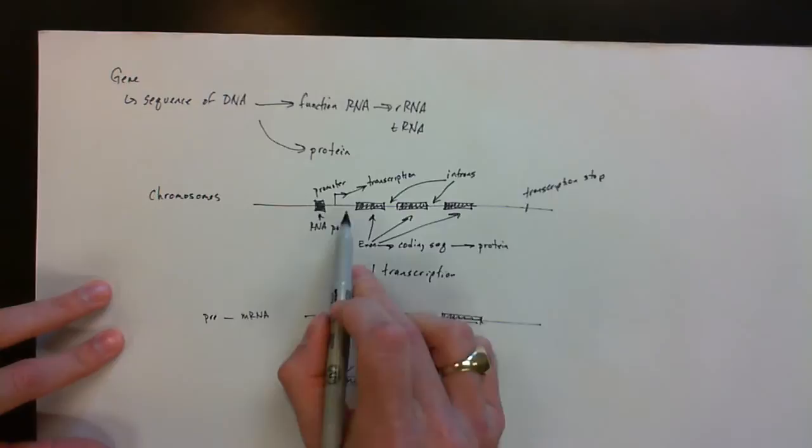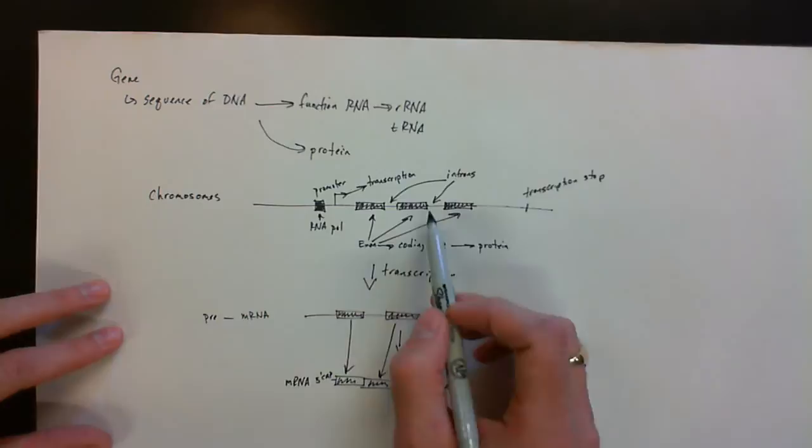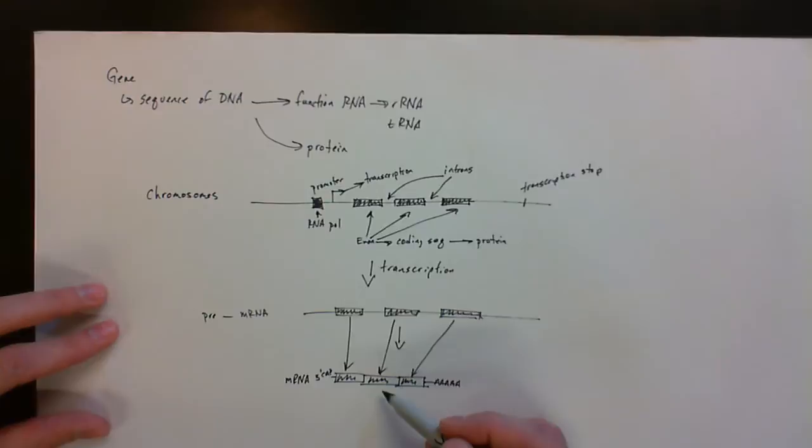And then within the gene we're going to have exons, which are the parts that we want to keep, and the introns, which are parts we're going to throw away. Not that they're not functional, it's just they're not going to be utilized in the code, which is down here at the bottom.